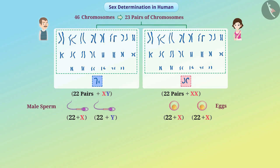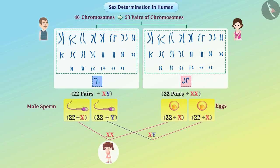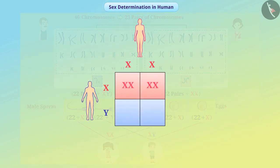During fertilization, if the sperm with the X chromosome fuses with an egg containing X chromosome, the sex chromosomes of the zygote produced will be XX, which will develop female traits. But if the sperm with Y chromosome fuses with the egg containing X chromosome, then the sex chromosomes of the zygote will be XY, which develops male traits. Since half of sperms have X chromosome and half have Y, the probability of a zygote being male is the same as that of being female.